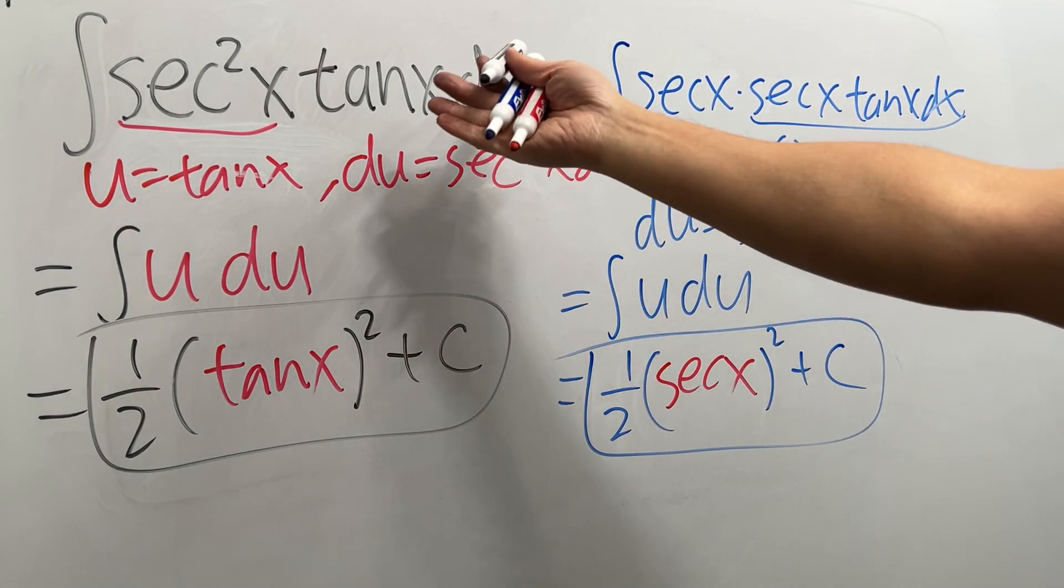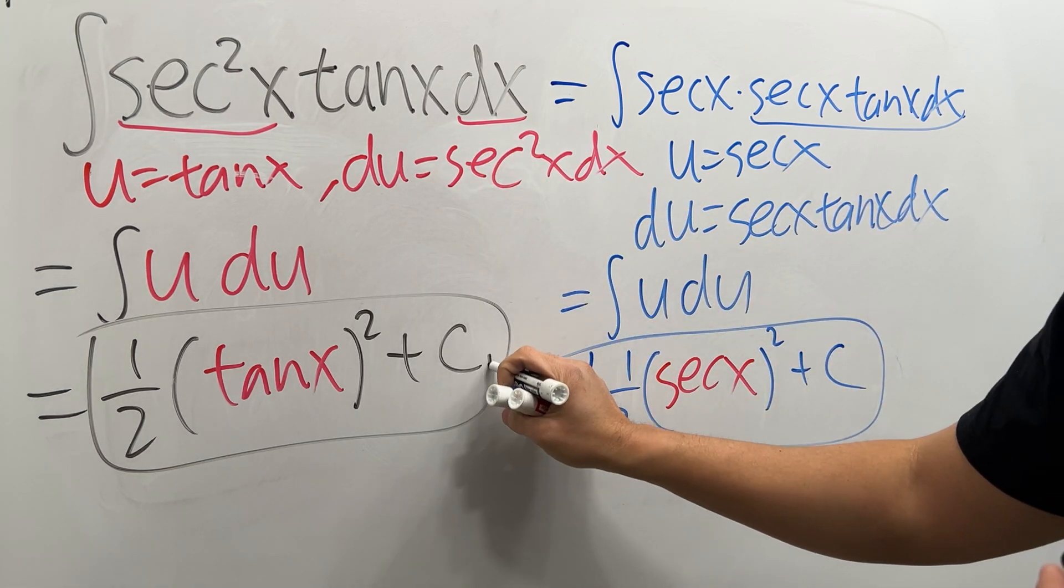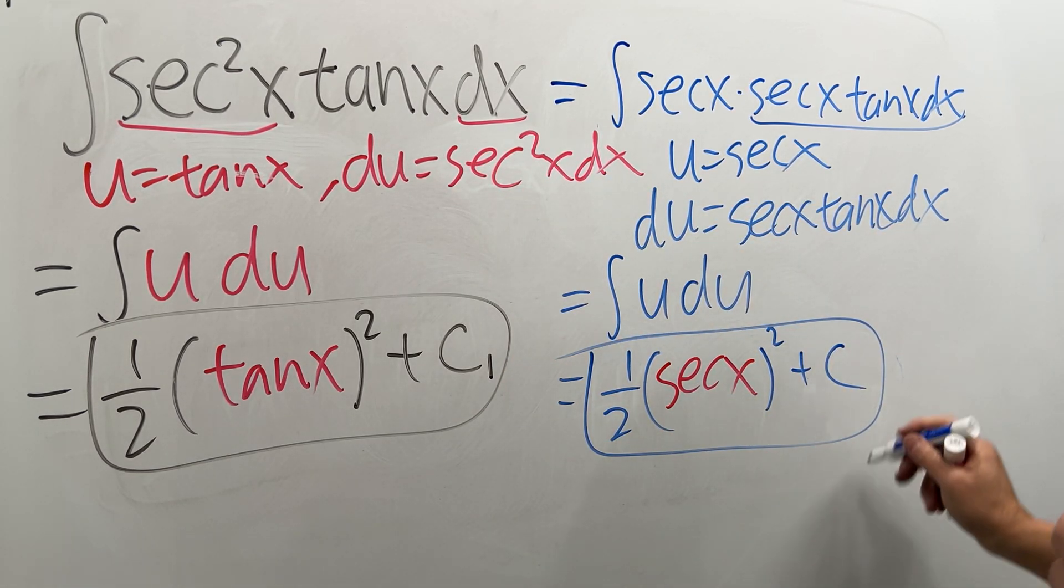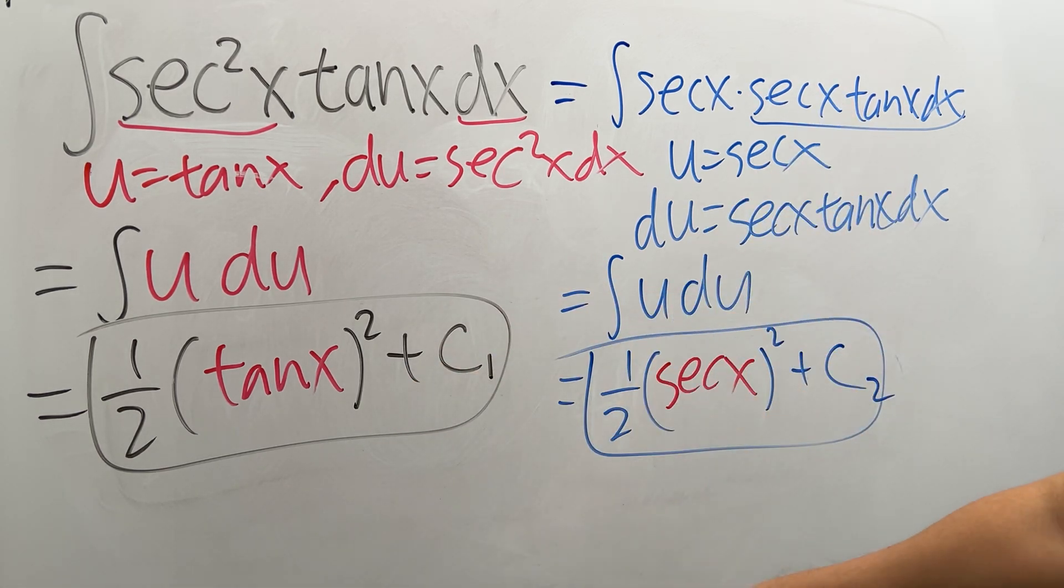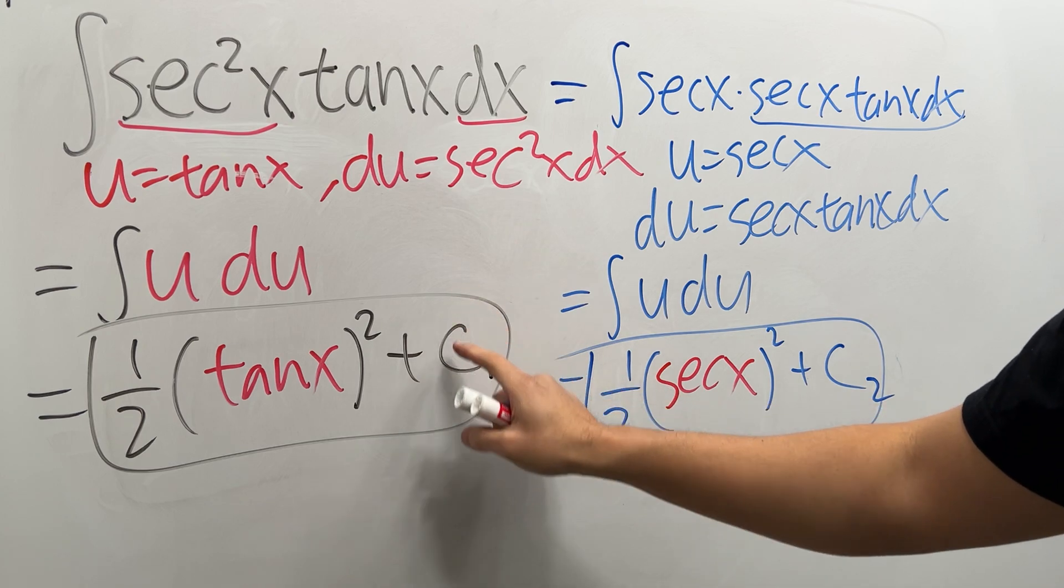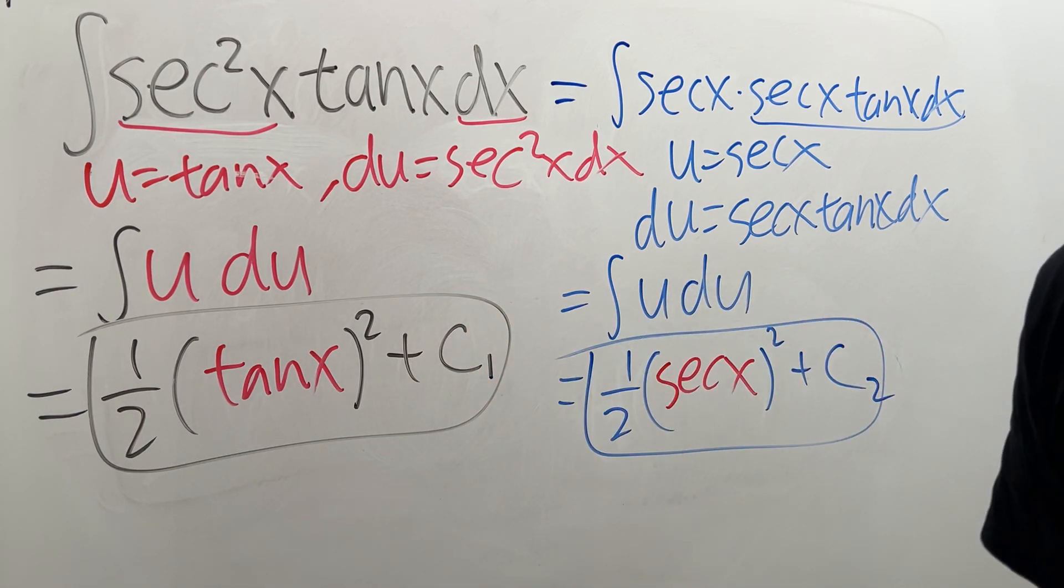In fact, they are both correct to be the answer for the integral, because this constant is different than that constant. So the result of the integration, they are just off by a constant. That's all. So what's this constant? Well, I can tell you it's 1 half. So that's it.